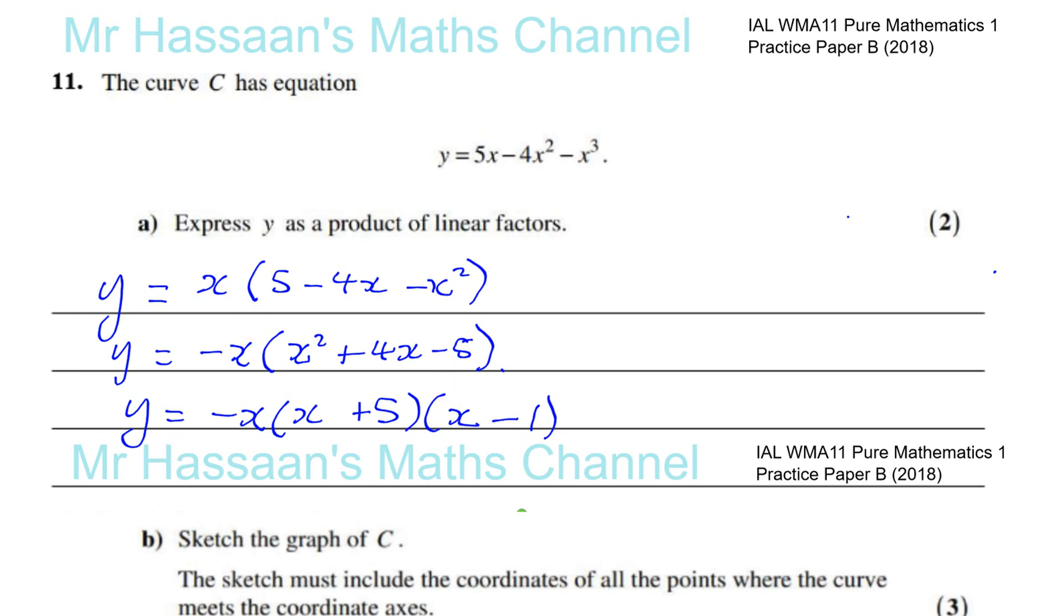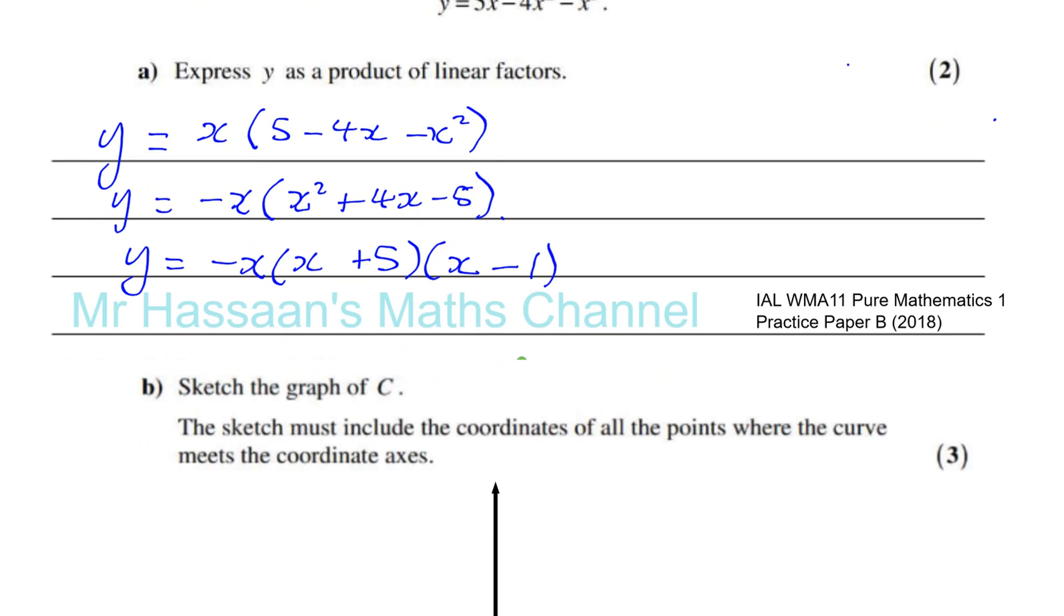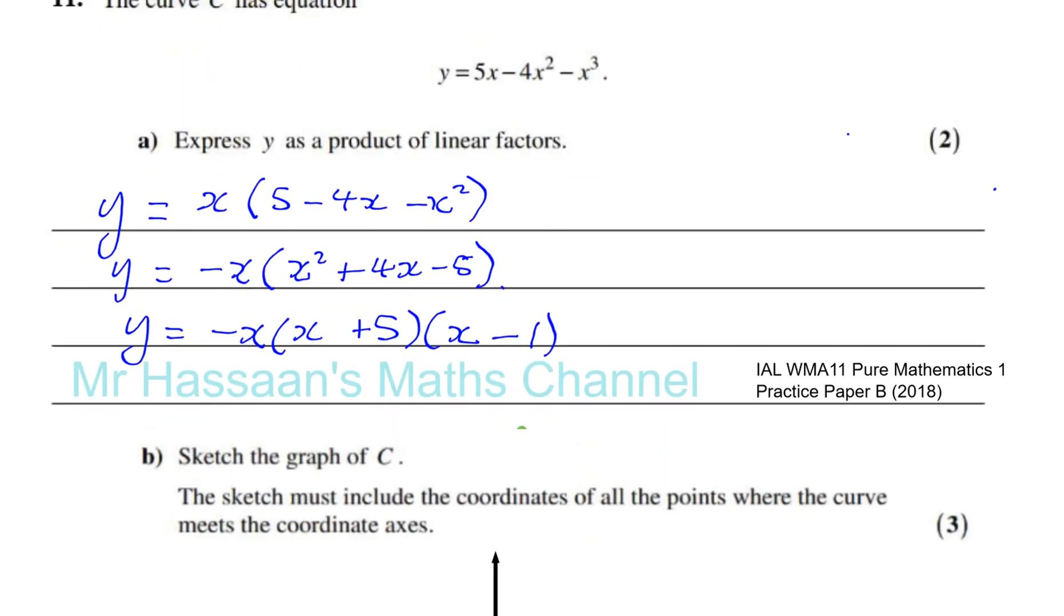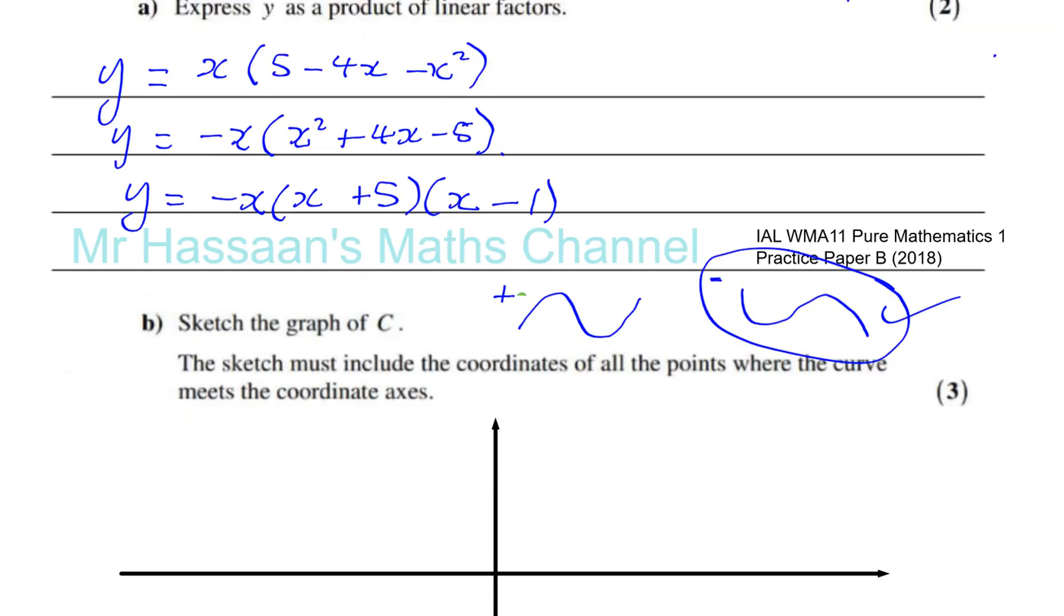For part B, we're asked to sketch the graph of C. We can see here that this is a cubic graph. Cubic graphs either have this shape or they have this shape here. If the X cubed term is positive, it looks like this, up and up. If the X cubed term is negative, it looks like this. So this is how it's going to look. So it looks something like this. It's going to go down and then down again. And we can see that it's going to cross the origin for sure.